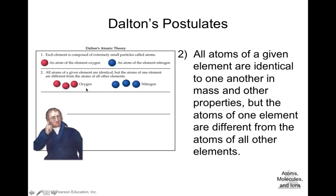For example, oxygen is represented by red spheres — all atoms of oxygen are the same. Nitrogen is represented by blue spheres — all of those atoms are the same. But the atom of oxygen is different from the atom of nitrogen. When talking about an element, all atoms of that specific element are identical, but when comparing atoms from different elements, those atoms are different.